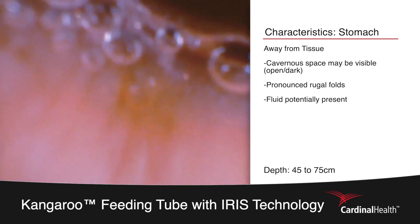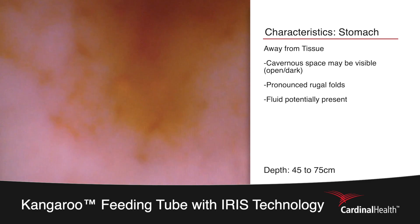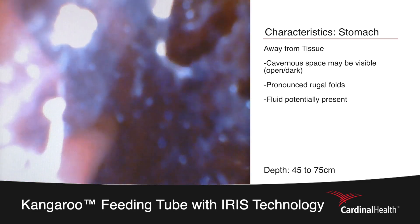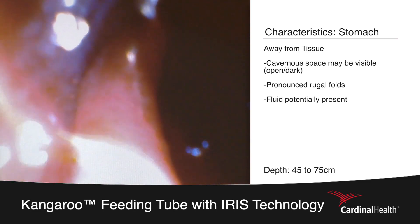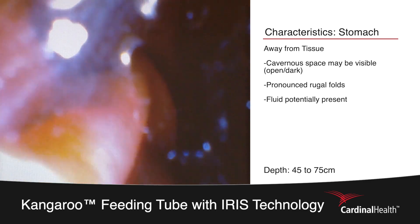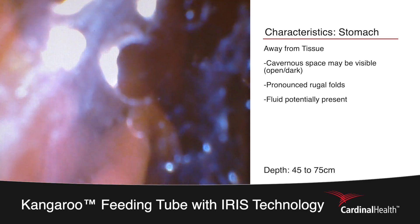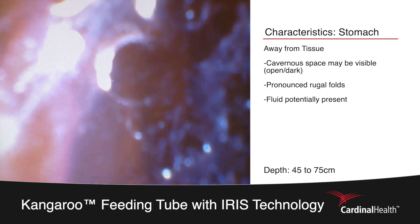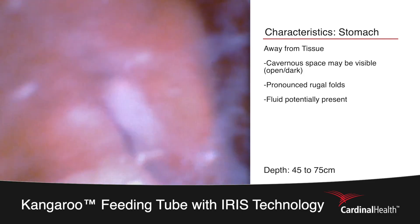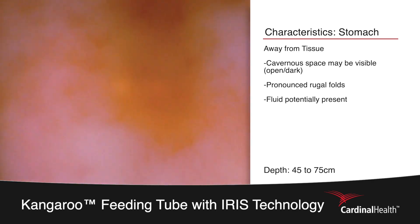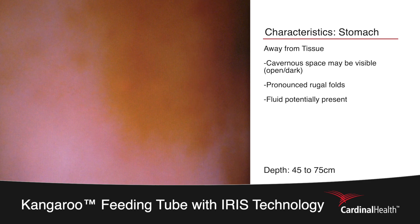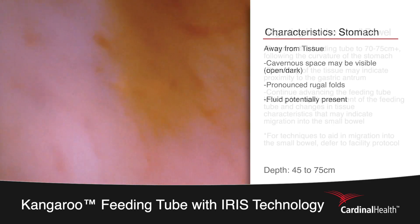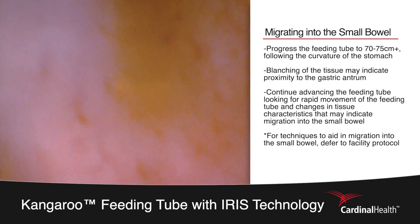This will allow you to visualize the large irregular folds of the rugal folds as well as the dark cavernous stomach. If any moisture collects on the end of the camera, continue to progress the tube into fluid or up against the tissue to resolve any visualization issues. Here we're seeing movement and progressing down towards the base of the stomach where we're going to look for rapid movement as well as any changes in the tissue of the stomach into the small bowel.